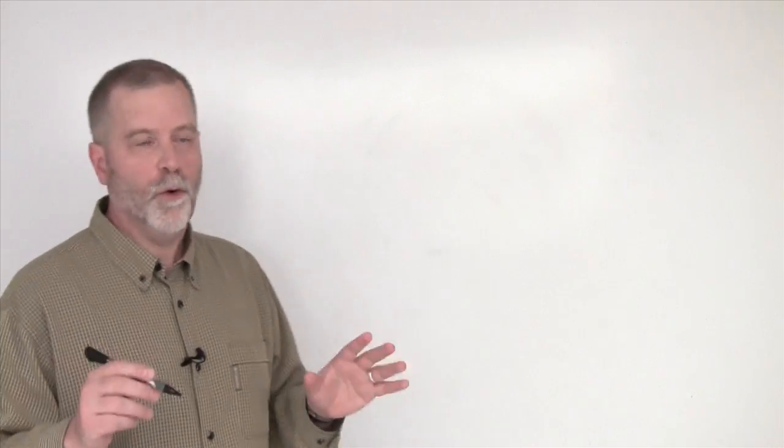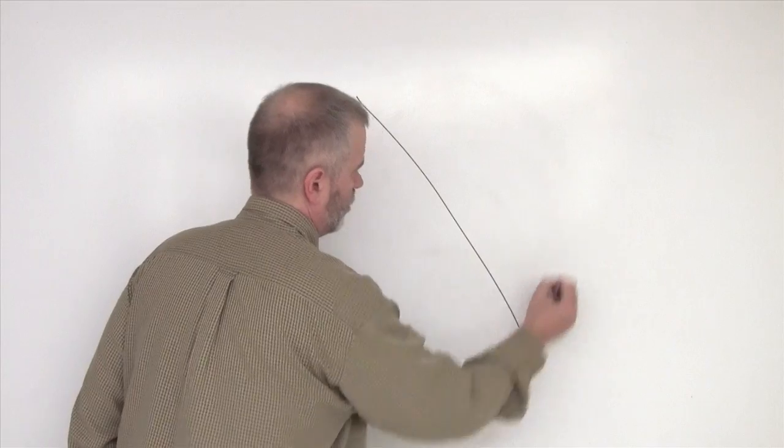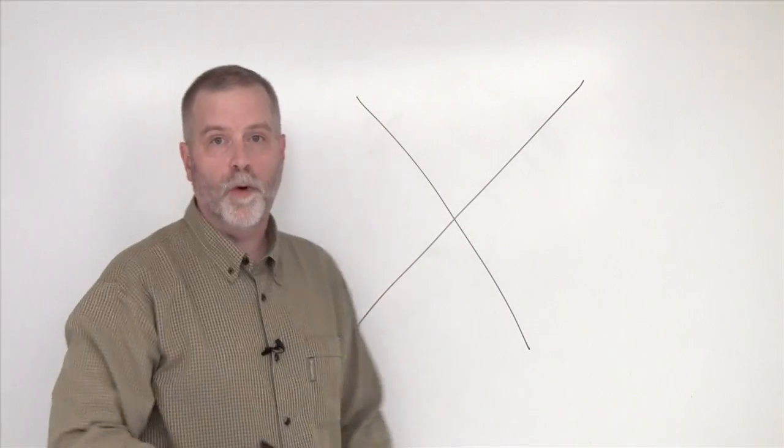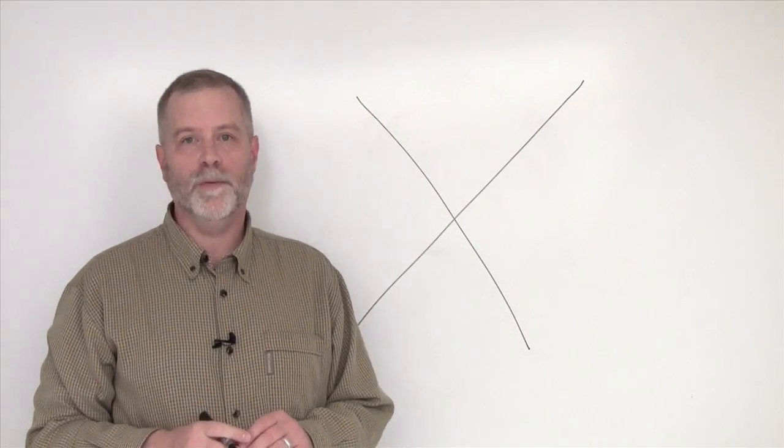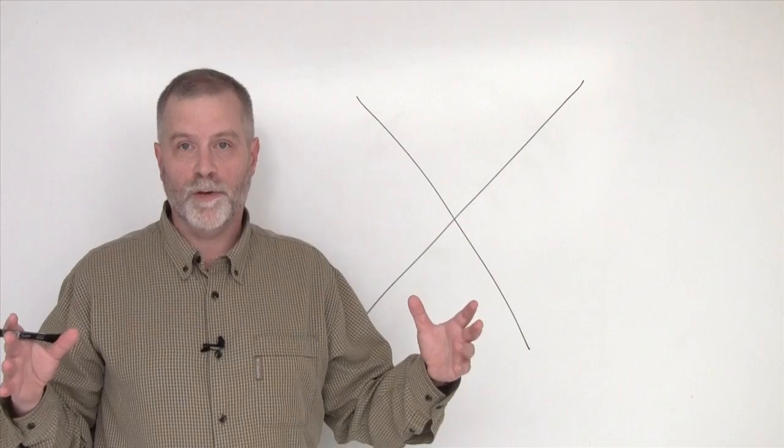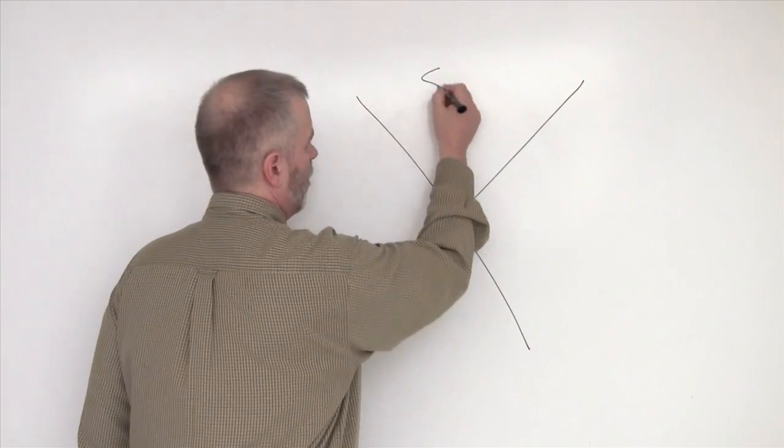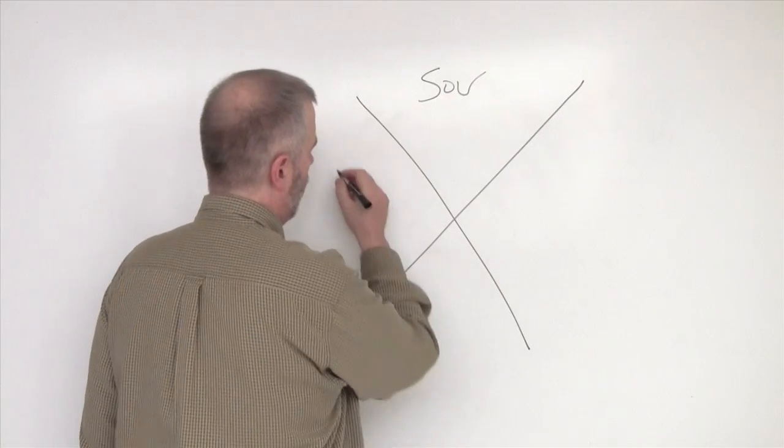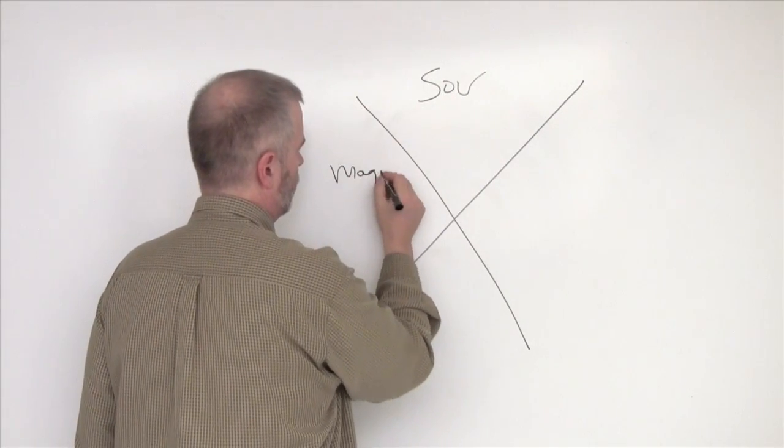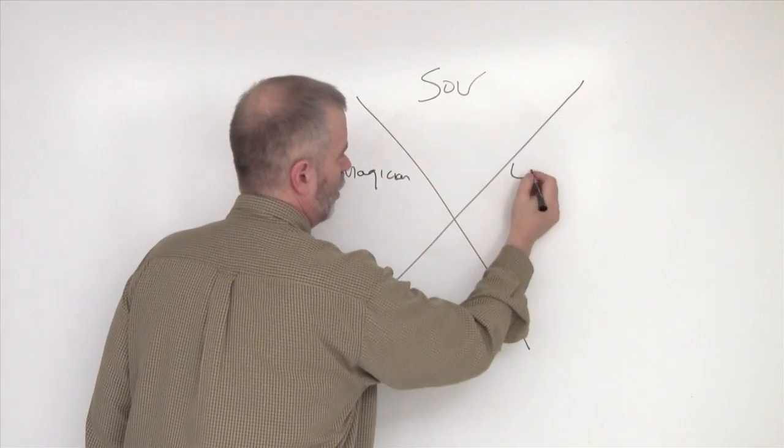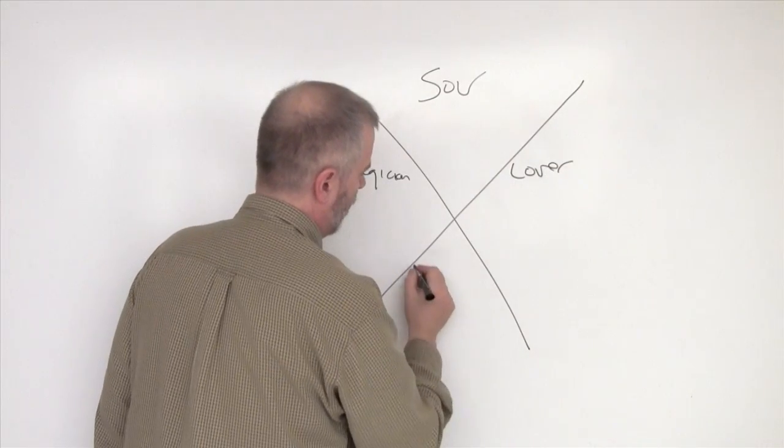I want to start by using the four archetype model that Robert Moore came up with, which was really fleshed out in the shadow work method by Cliff Barry. In this model, there are four archetypes: the sovereign, the magician, the lover, and the warrior.